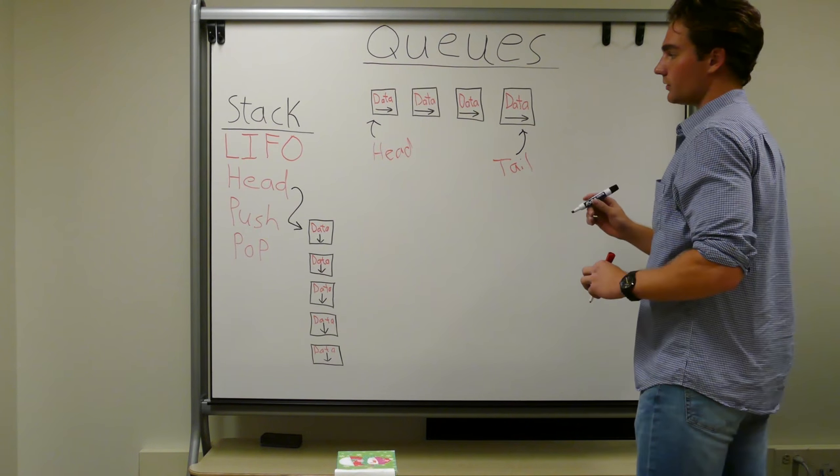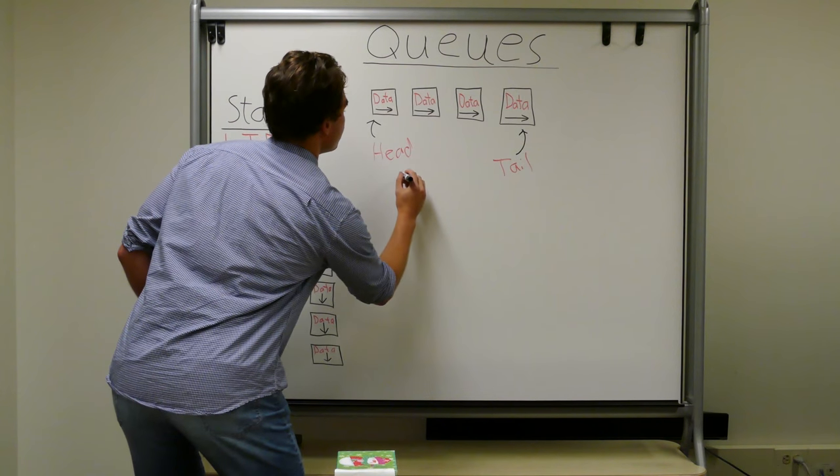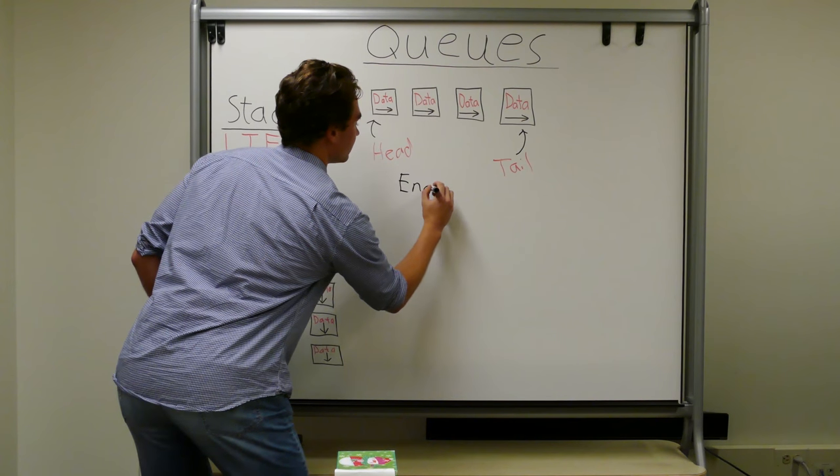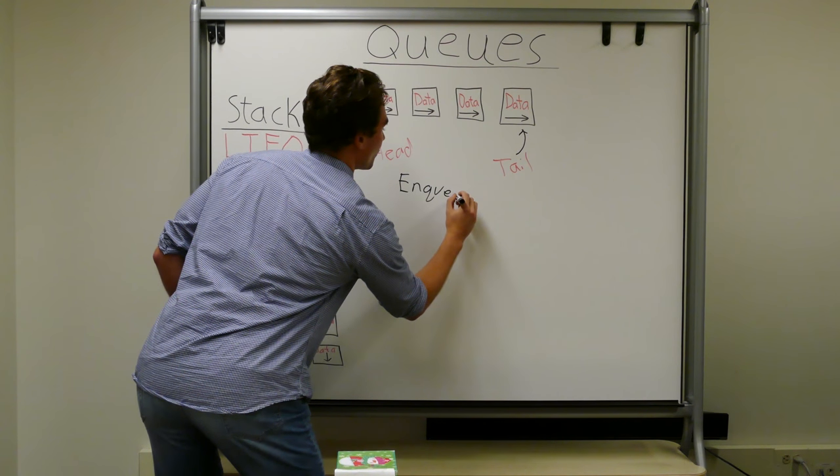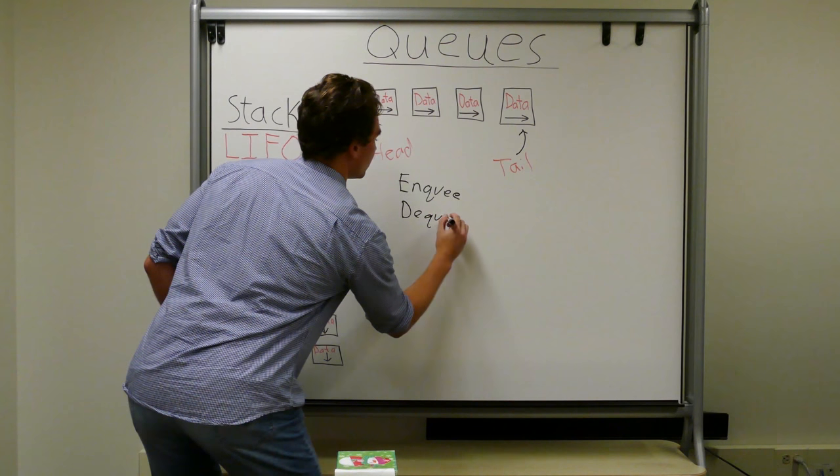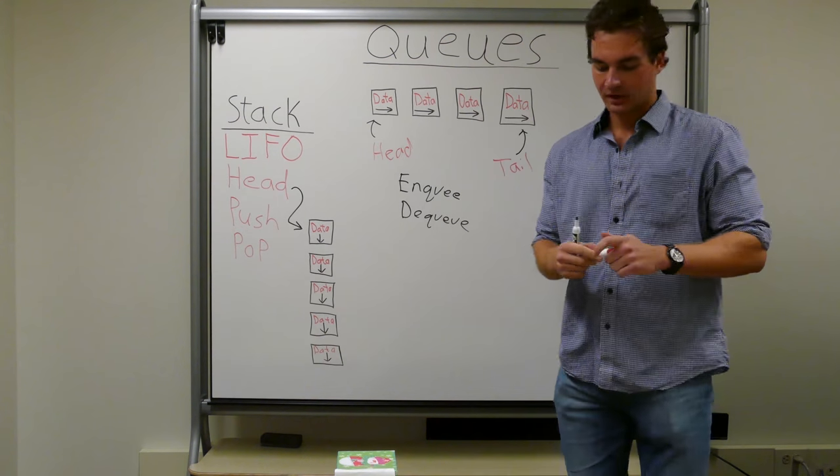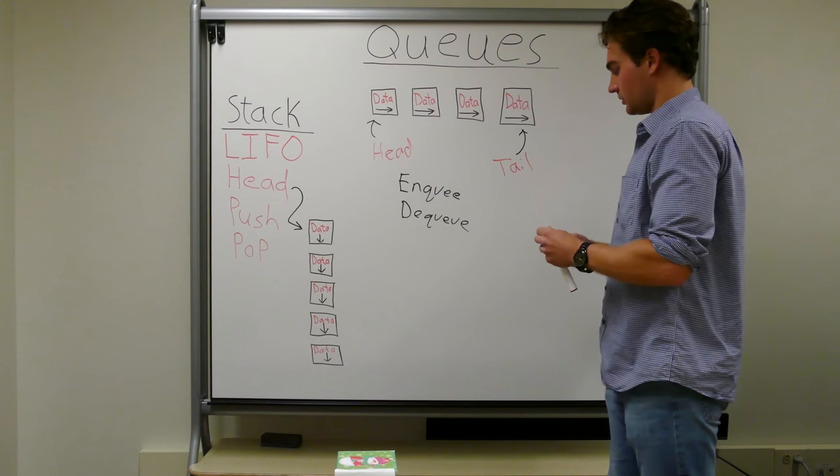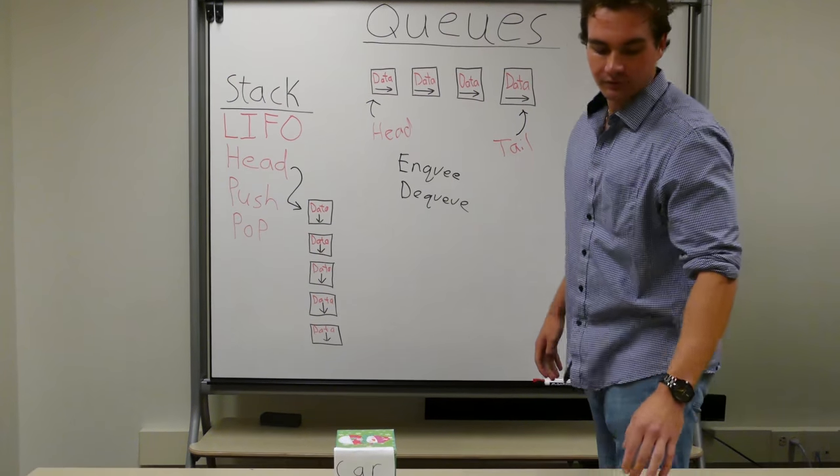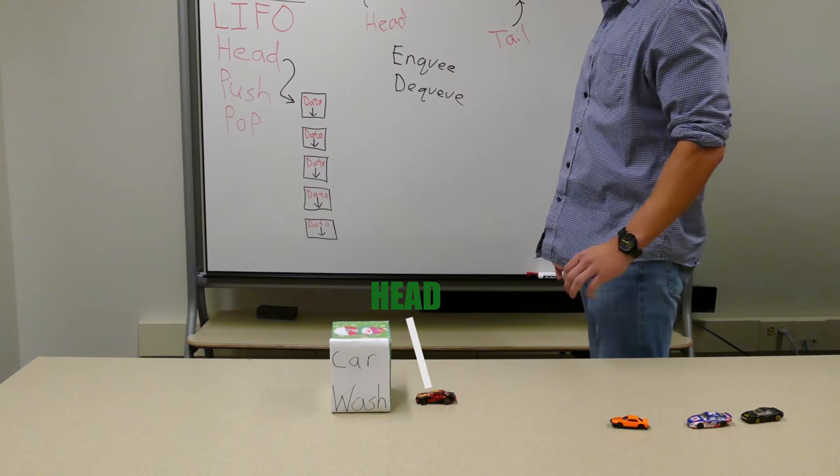Now, so the operations that a queue performs are enqueue and dequeue. So basically, if we go back to our car wash example, when there is no line, the queue is empty. Then the first one, this black and red car, gets enqueued, which means he is added to the front of the queue.